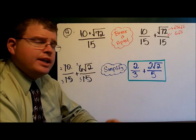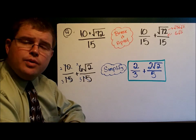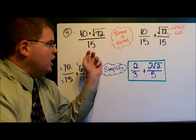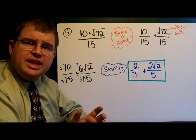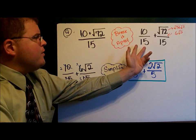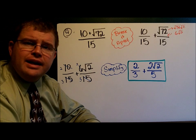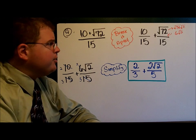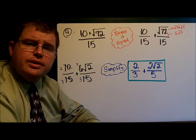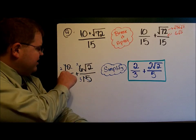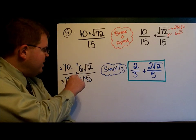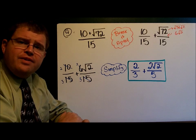Let's take a look at the solution. We have 10 plus the square root of 72 all over 15. First thing we did was break it apart. So we have 10 over 15 plus the square root of 72 over 15. And the square root of 72 reduces to 6 square roots of 2. That gives me 10 over 15 plus 6 square roots of 2 over 15.